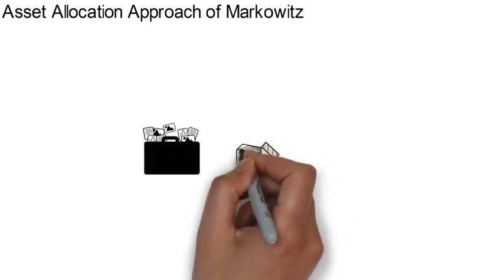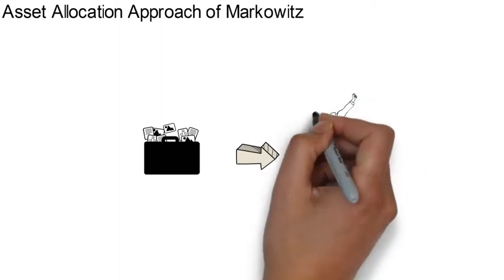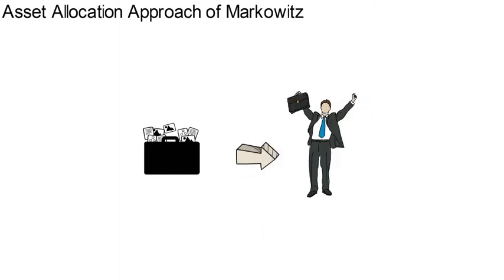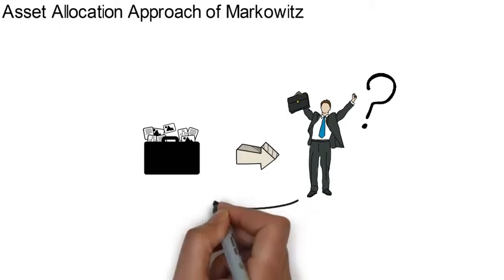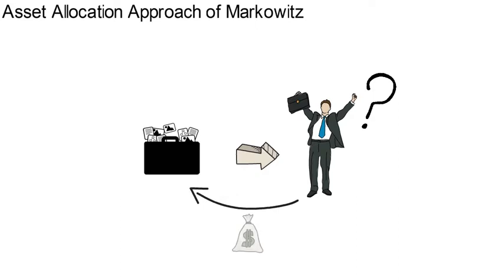The objective of asset allocation is to find an investment portfolio so that the investor's degree of happiness is greatest. We therefore have to know three things. First, what makes an investor happy? Second, which assets can he or she invest into? Third, what are the risks and expected returns of all these assets?